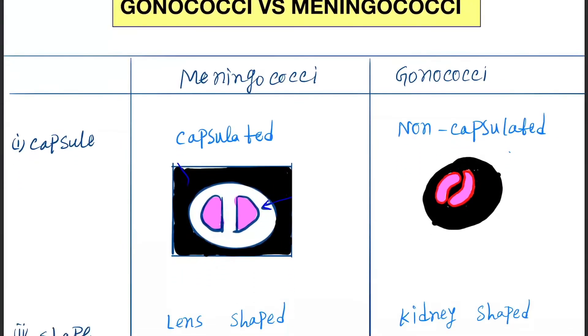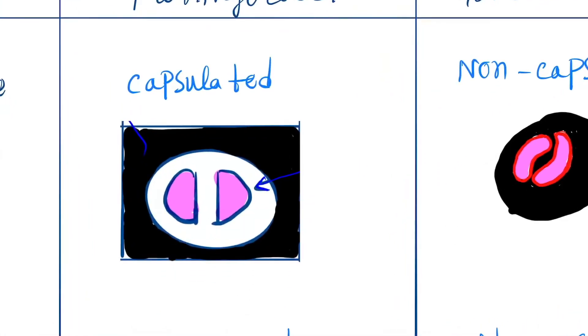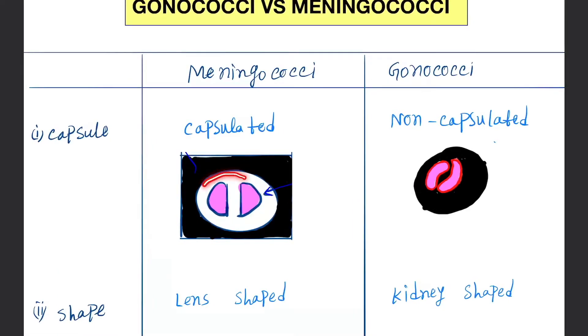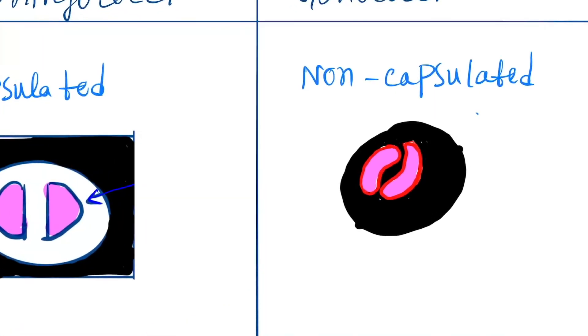First is capsule. If we do negative staining, you can see the black color from India ink. Here meningococci is capsulated - you can see the white portion, this is the capsule. Gonococci, you can see only India ink, no white portion - this is non-capsulated.